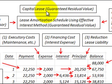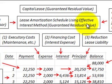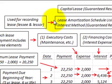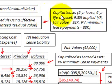Here we're going to be looking at a capital lease with a guaranteed residual value. We're going to be setting up a lease amortization schedule using the effective interest method, which includes the guaranteed residual value. This amortization schedule is used for recording the lease both by the lessee and the lessor.